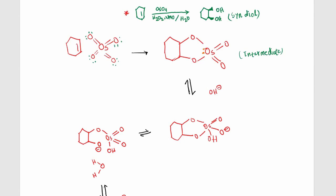In this video, I'm going to talk about the syn-dihydroxylation reaction. An alkene in the presence of osmium tetroxide and hydrogen peroxide gives the syn-diol.